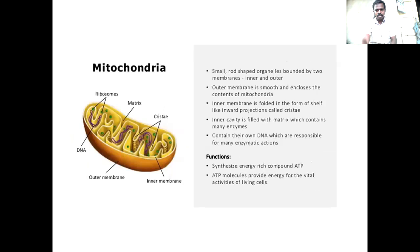Mitochondria are small rod-shaped organelles bounded by two membranes: an inner and outer membrane. The outer membrane is smooth and encloses the contents of the mitochondria. The inner membrane is folded inward in the form of projections called cristae. The inner cavity is filled with a matrix containing many enzymes. Mitochondria contain their own DNA responsible for encoding many enzymes. Mitochondria synthesize the energy-rich compound ATP, which provides energy for the vital activities of living organisms.